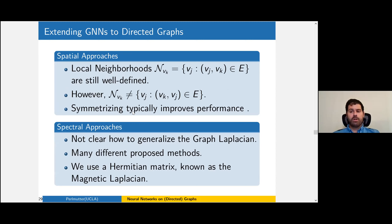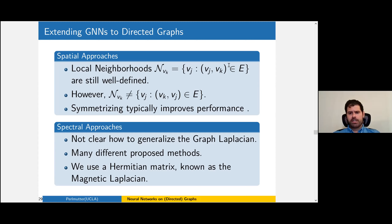One thing to note is that local neighborhoods are still well-defined in directed graphs, so most spatial methods do have straightforward extensions. The problem is that they look at links going from J to K and completely ignore links going from K to J — picking half of the information and throwing out the other half in a more or less arbitrary manner. So typically, symmetrizing improves performance because at least that way you're not throwing out half your information. For spectral approaches, it's not clear what to do, because there's not an obvious generalization of the graph Laplacian.